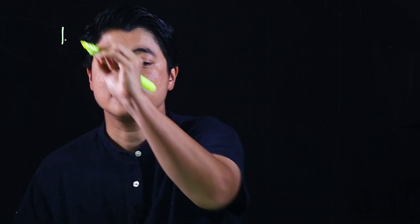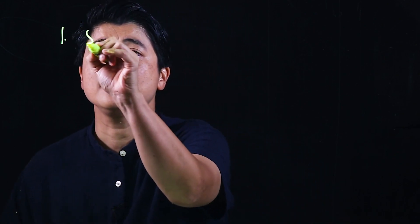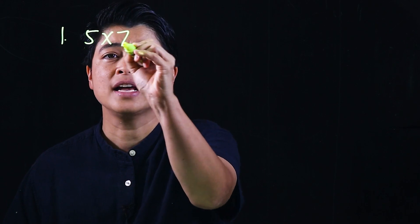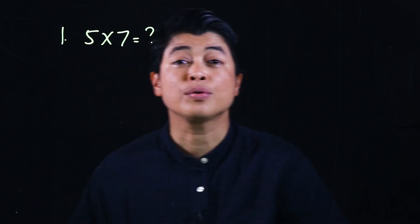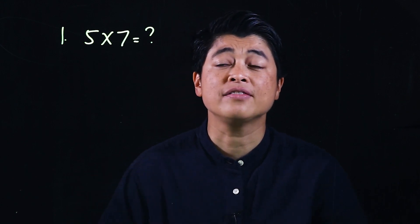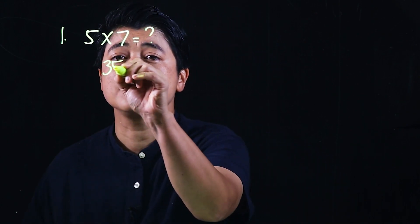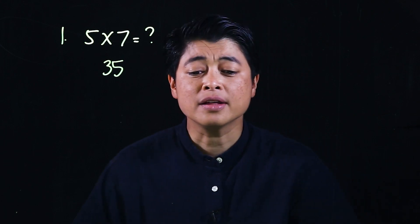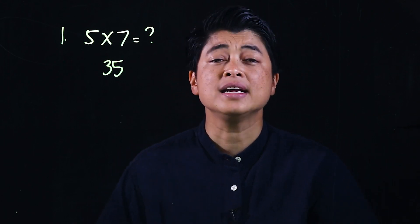The problem says multiply 5 by 7. Here it's easier to count by 5 than it is to count by 7, so when we count by 5 for 7 fingers, that will give us 35.